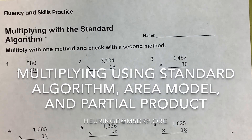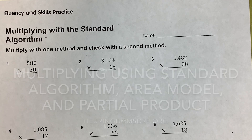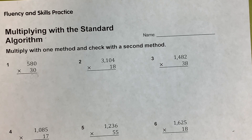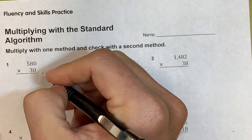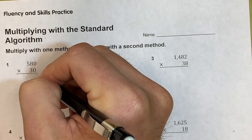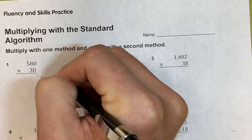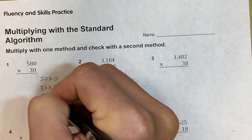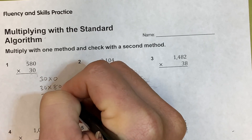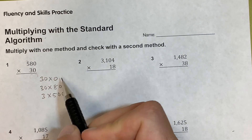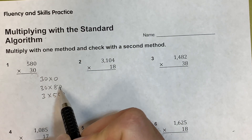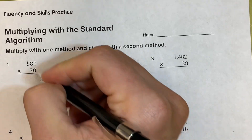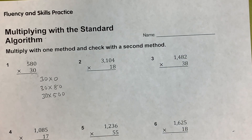We're going to go over the standard algorithm for multiplication, as well as the area model and partial product. For the first one, let's do partial product. Normally what you would do is write 30 times 0, 30 times 80, and 30 times 500 — breaking down 580 into expanded form: 500 plus 80 plus 0. Then we take 30 times all those numbers and add them together.